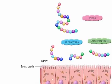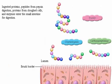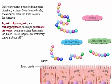Ingested proteins, peptides from pepsin digestion, proteins from sloughed cells, and enzymes enter the small intestine for digestion. Trypsin, chymotrypsin, and carboxypeptidase — the major pancreatic proteases — continue protein digestion in the lumen. These enzymes are maximally active at about pH 7.